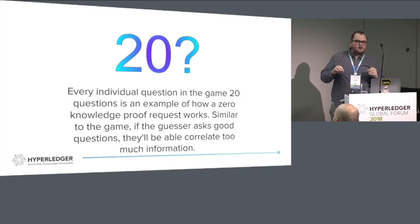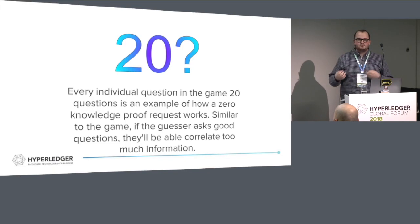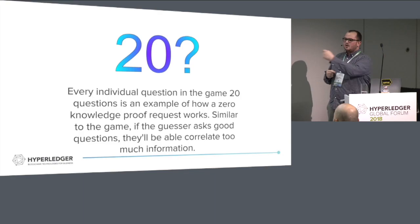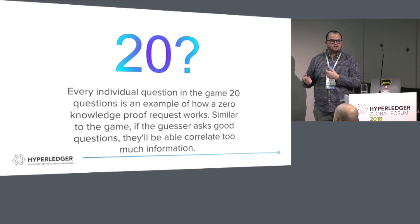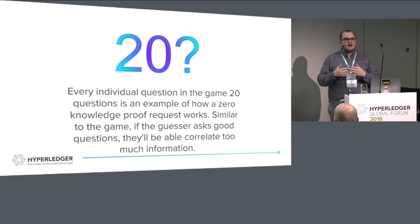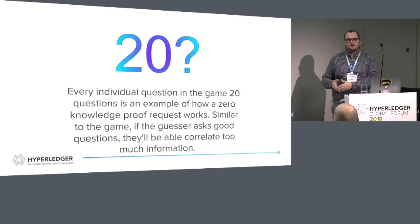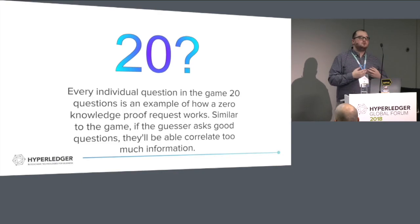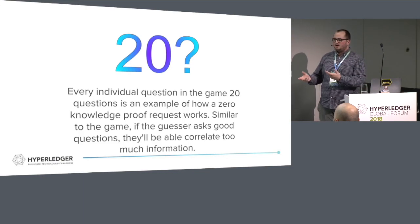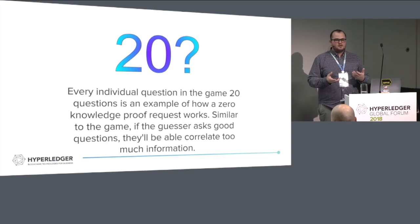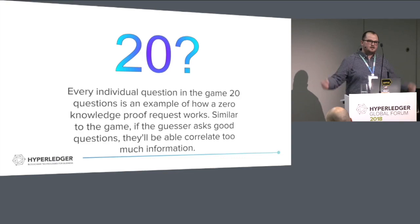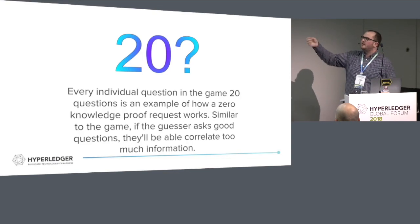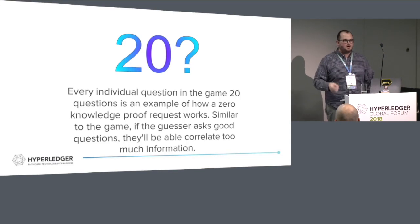The caveat: if you think about the game 20 Questions, it's essentially a zero-knowledge proof game. In each question I'm asking and getting a yes/no answer back, if I get enough yes/no answers I can start to guess the actual information itself. The awesome part is the person who has the information - typically the holder - can choose to no longer answer questions, just like a person can quit the 20 Questions game after one question. Zero-knowledge proofs are not the silver bullet to privacy - they just help enable it.